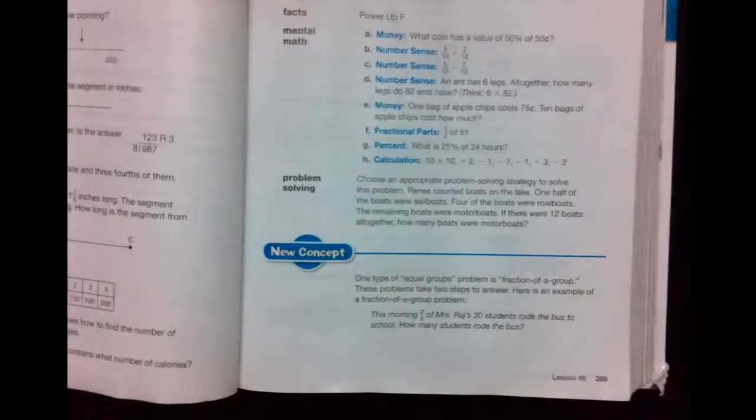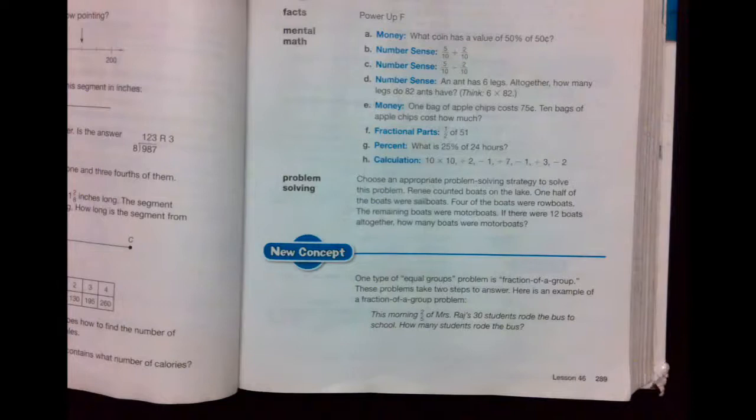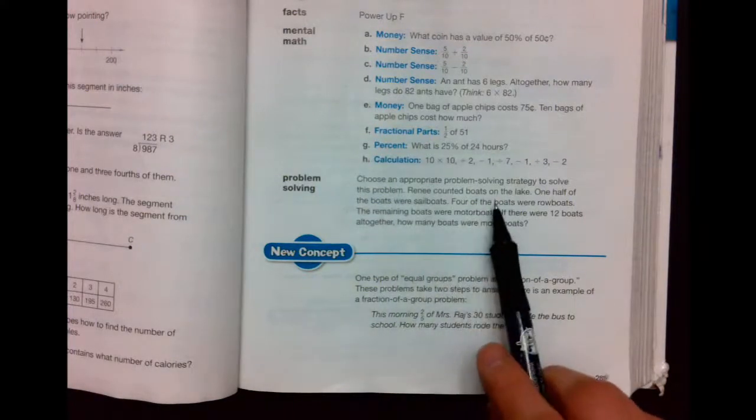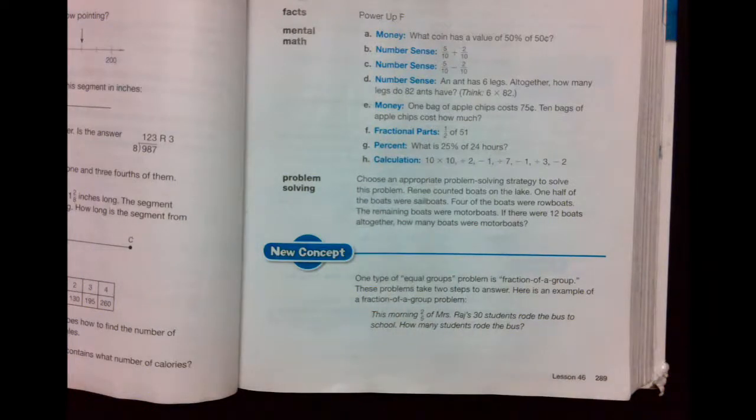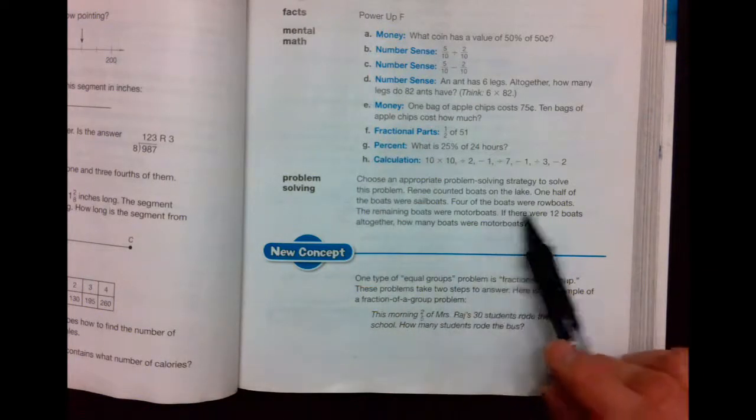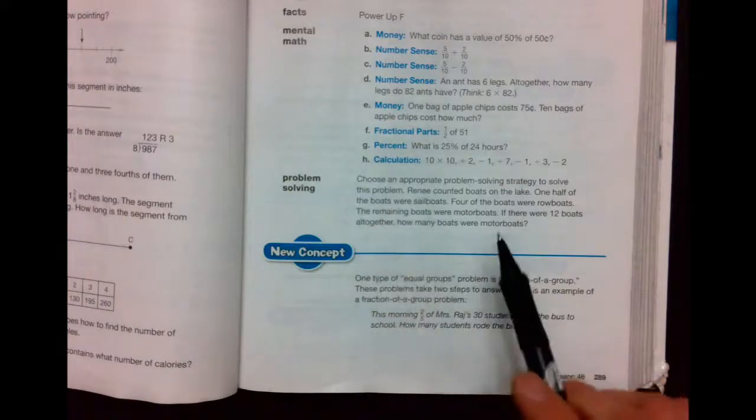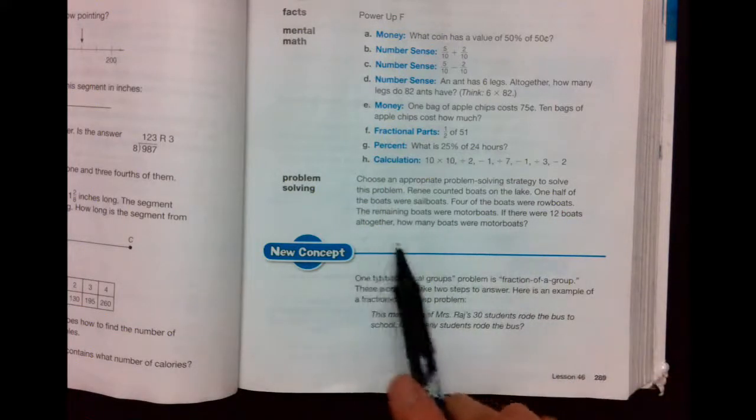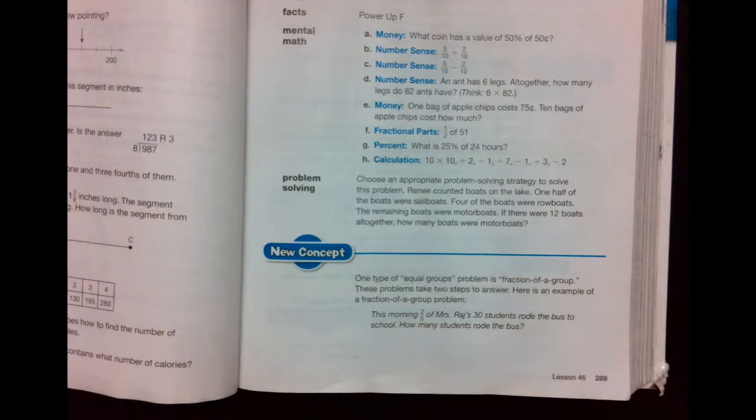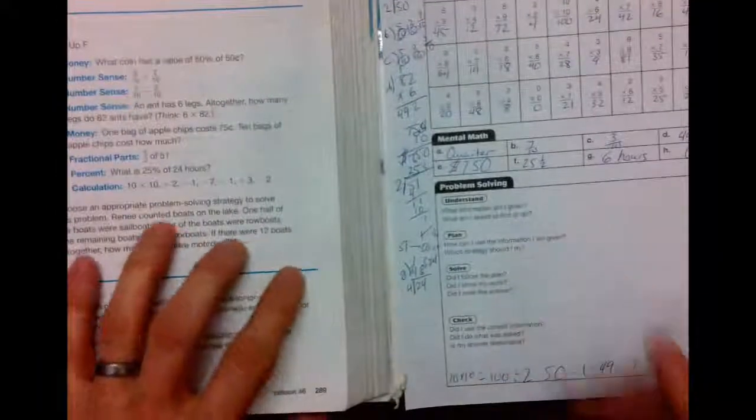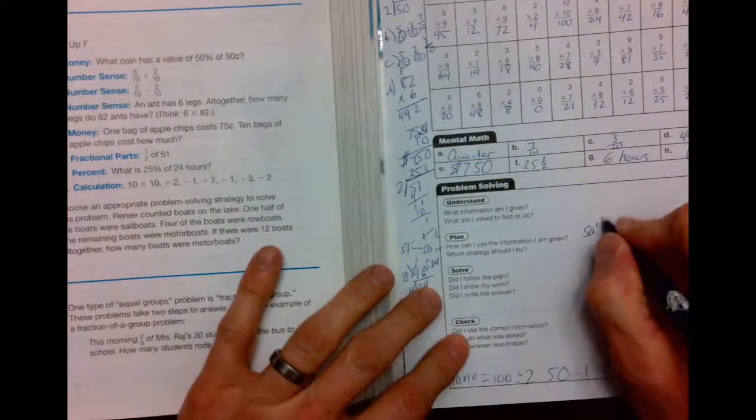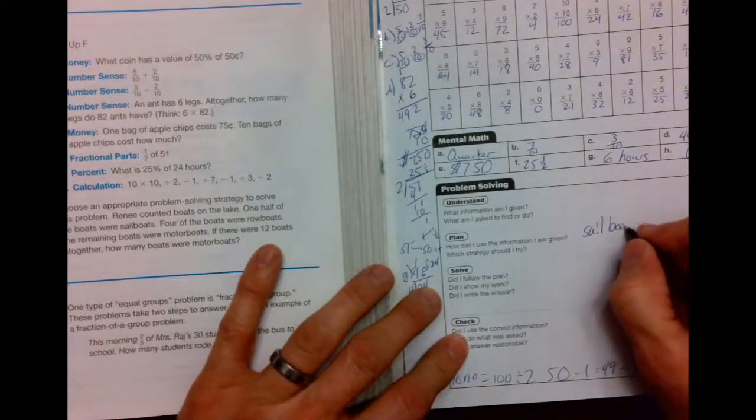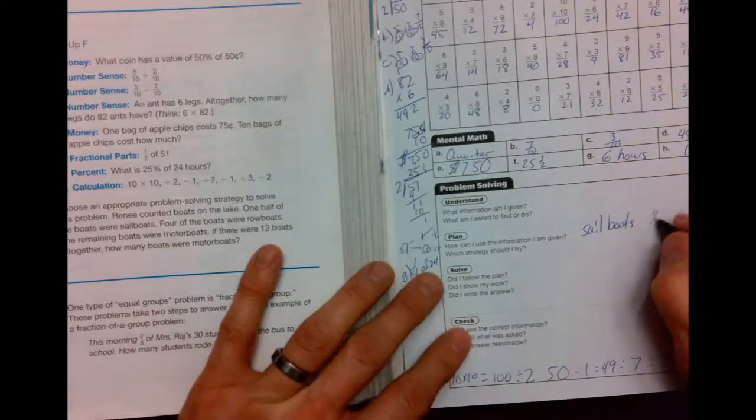Alright. Here's a fun little word problem for today. It says, let's choose an appropriate problem-solving strategy to solve this problem. Rene counted boats on the lake. One half of the boats were sailboats. Four of the boats were rowboats. The remaining were motorboats. If there are 12 boats altogether, how many boats were motorboats? So let's get our three different kinds of boats there. Rene counted boats. Half of the boats were sailboats, so we'll put sailboats here. And we only know half.